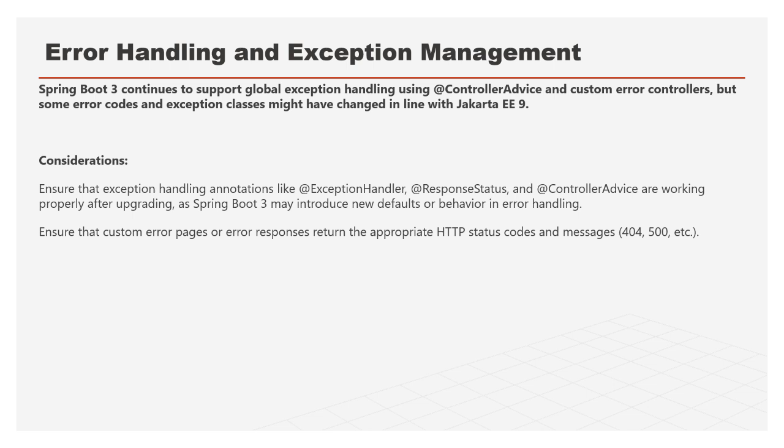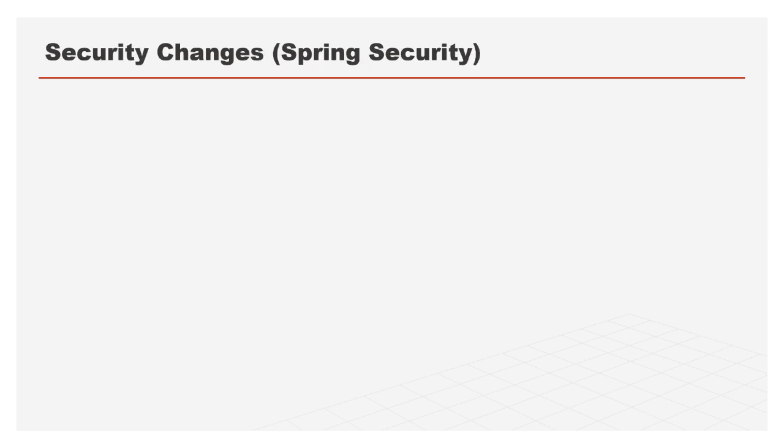For error handling and exception management, global exception handling using @ControllerAdvice and custom controller responses should still be supported, but some error codes and exceptions may have changed in alignment with Jakarta EE. Ensure annotations like @ExceptionHandler, @ResponseStatus, and @ControllerAdvice are all working properly after upgrade, as there are some new defaults and behavior changes. Also verify your custom error pages and HTTP response status codes and messages are working correctly.